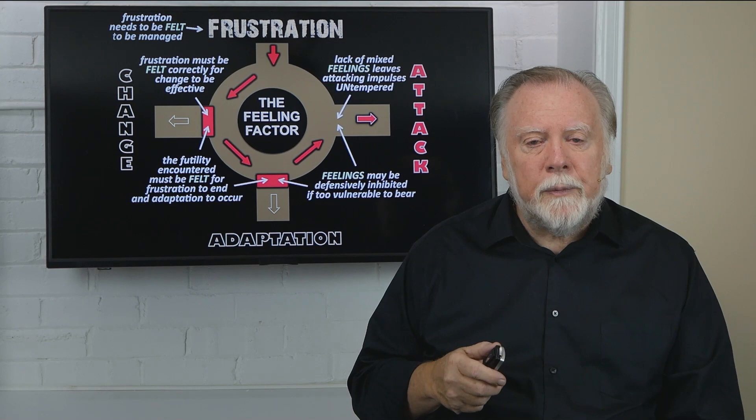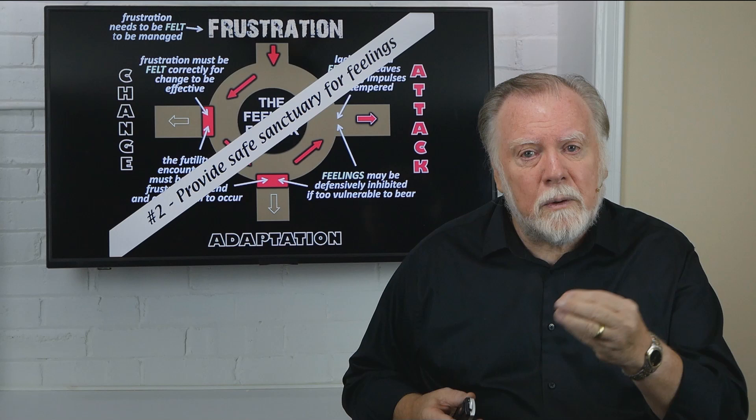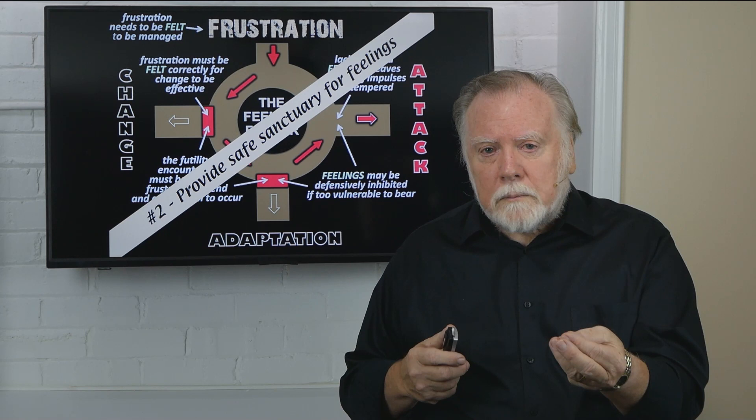The implication here is to provide safe sanctuary for feelings. Now, what is a safe sanctuary for feelings? Well, we mentioned one, which is safe relationships, a safe place to cry. If it's a safe place to cry, it will be a safe place for other feelings. What is the other safe sanctuary? Well, this brings us to the third quick walk around, the play factor.